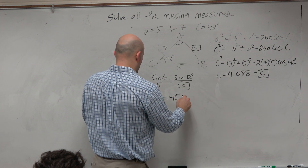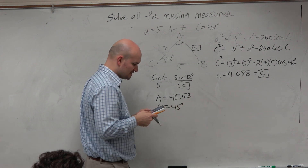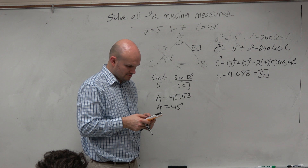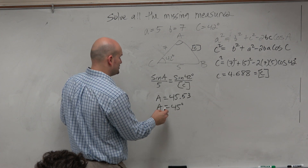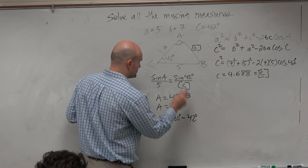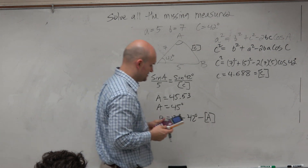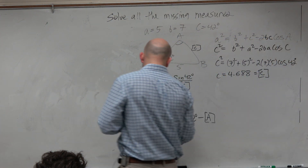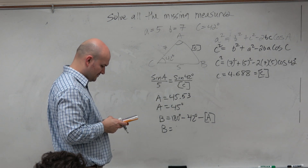Make sure you store that C. Then solve for A: do 5 times sine of 42 divided by stored C, then take sine inverse of that answer. I get 45.53, or approximately 45 degrees. I'm going to store that as alpha A. Then the last thing is to find B: B equals 180 degrees minus 42 degrees minus stored answer A.